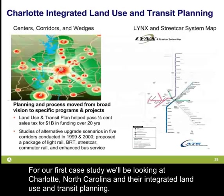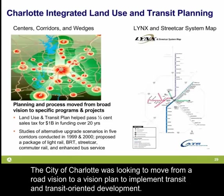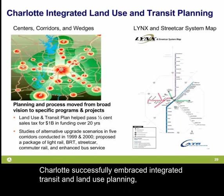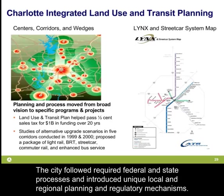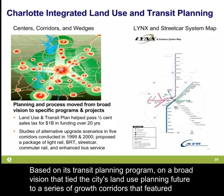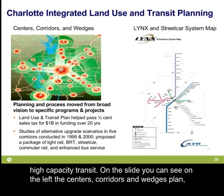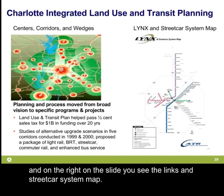For our first case study, we'll look at Charlotte, North Carolina and their integrated land use and transit planning. The city of Charlotte was looking to move from a road vision to a plan that implements transit and transit-oriented development. Charlotte successfully embraced integrated transit and land use planning, producing high transit ridership while accomplishing various livability goals. The city followed required federal and state processes and introduced unique local and regional planning and regulatory mechanisms, basing its transit planning program on a broad vision tying the city's land use planning future to growth corridors featuring high capacity transit. On the slide you can see the centers, corridors, and wedges plan on the left, and the links and streetcar system map on the right.